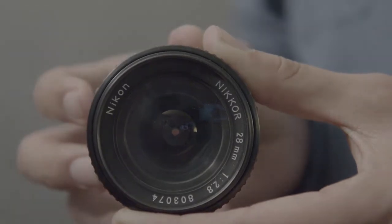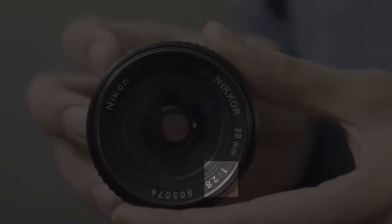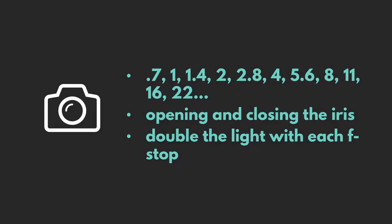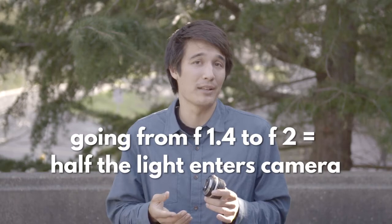On most lenses, on the front you'll have a number that says 1-colon-and then a number, and that number is the fastest or the most open that that lens can go. Typically these numbers go from 2.8, 4, 5.6, 8, 11, 16, 22. Each of these numbers correlates to a way of reading light, and with each number you're effectively cutting the light in half — reducing the amount of light coming in.